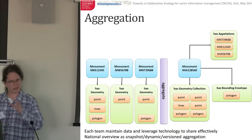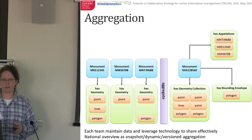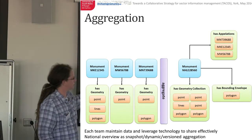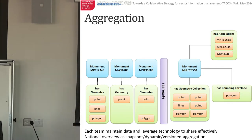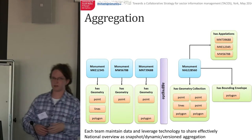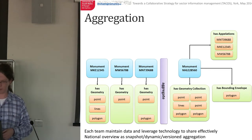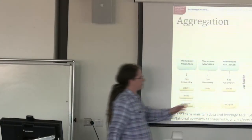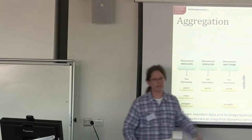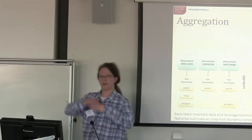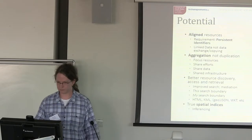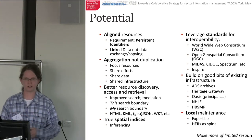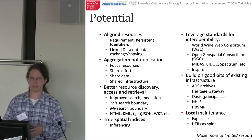This is interesting and up for discussion: national resources — are they not simply an aggregation of the local resources? We have our HERs with all their different depictions of the same monument, and we have our national record. Can we not see the national record as simply an aggregation of the collective local records — with, obviously, additional data? If there is additional stuff to be recorded at the national level, you can have that, but you don't need to duplicate work being done locally. You can layer this stuff, you can link this stuff. The potential is aligned resources using persistent identifiers — linking data, not exchanging, copying or transferring. Aggregation, not duplication.